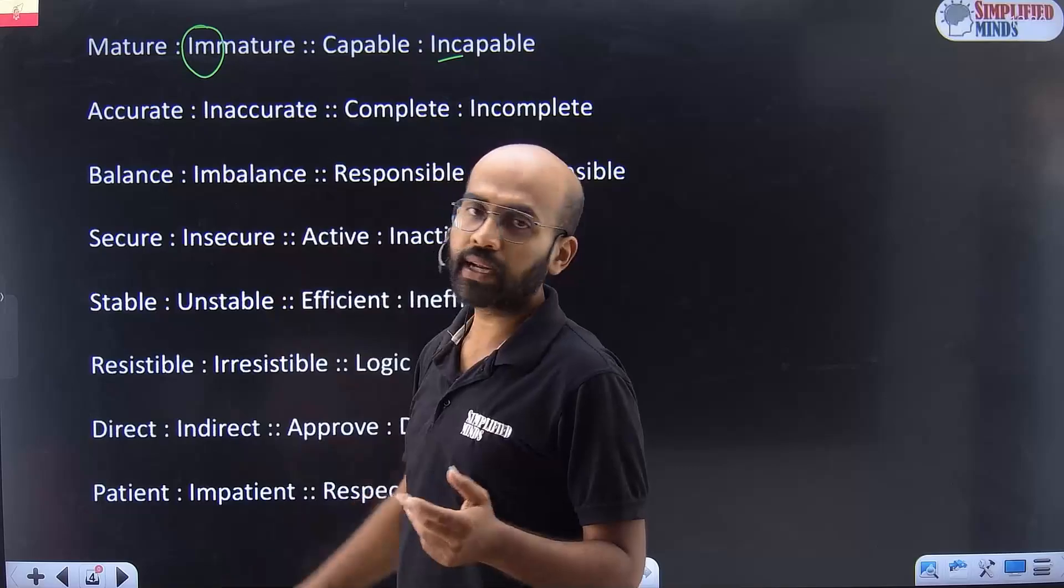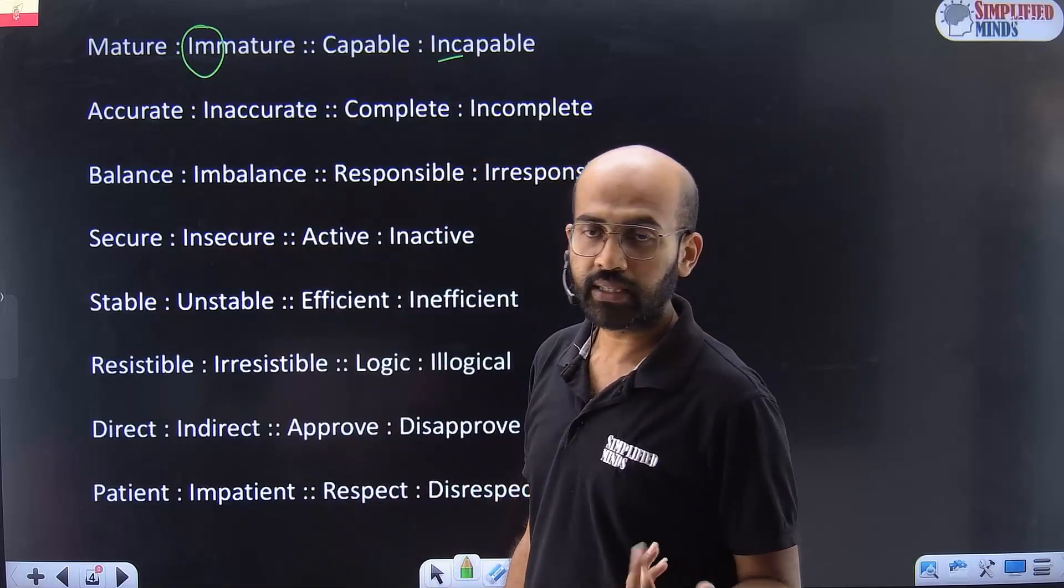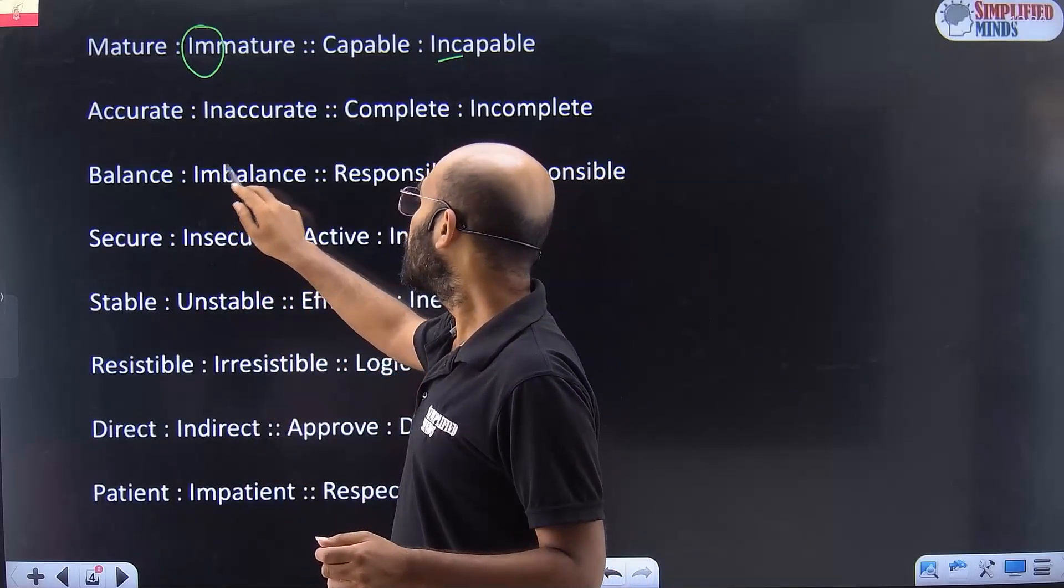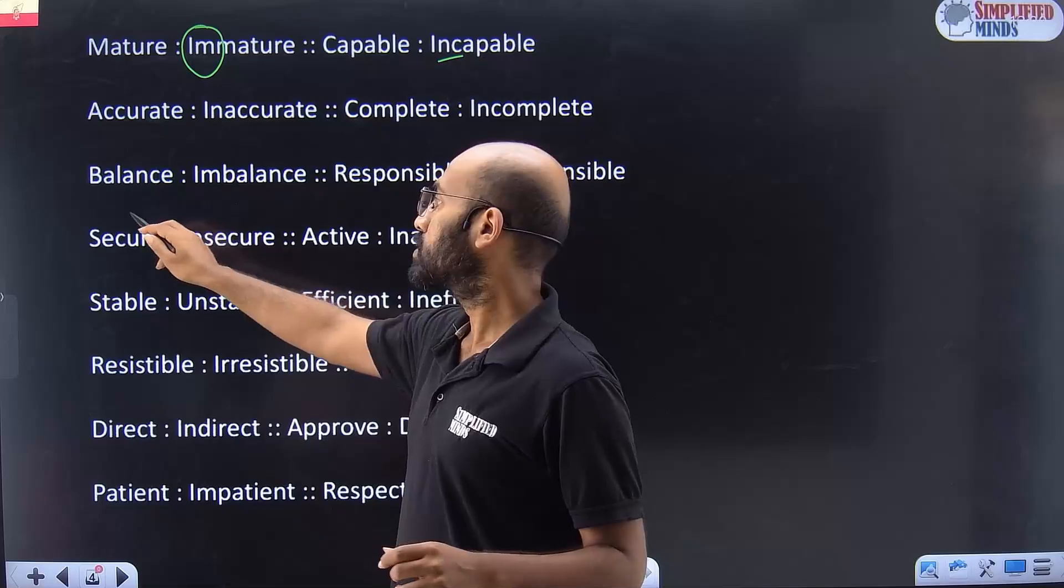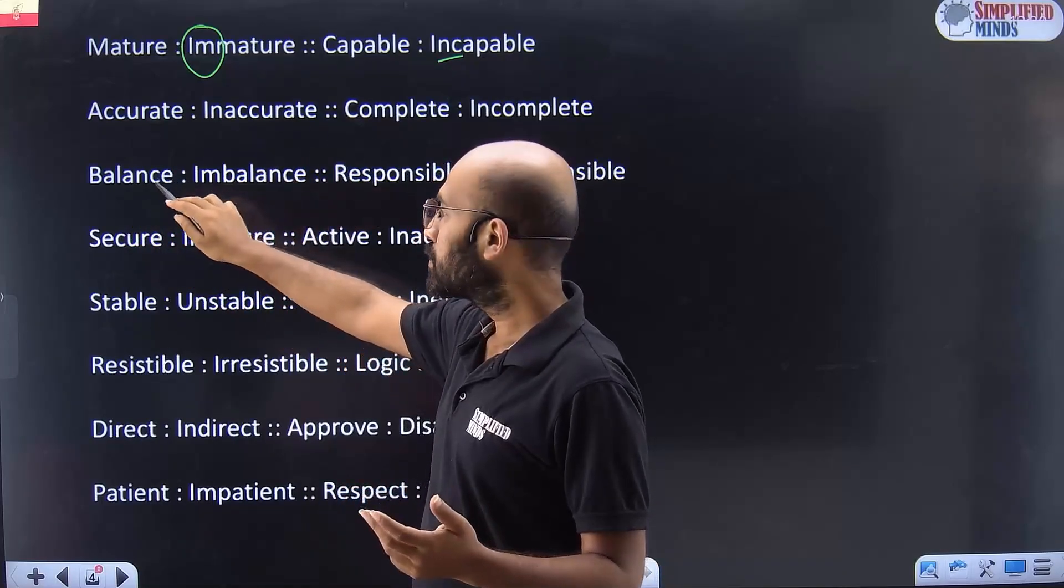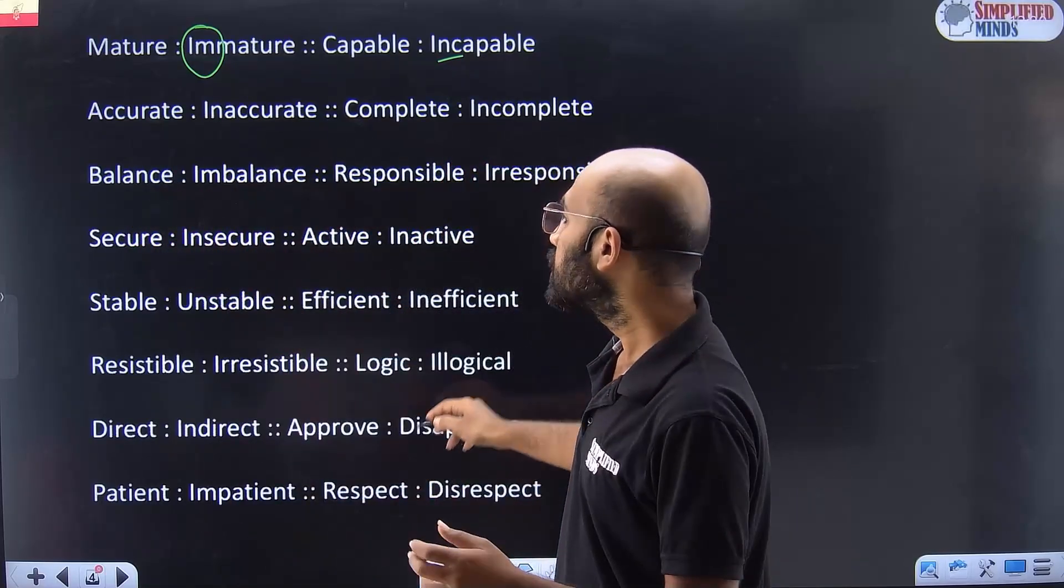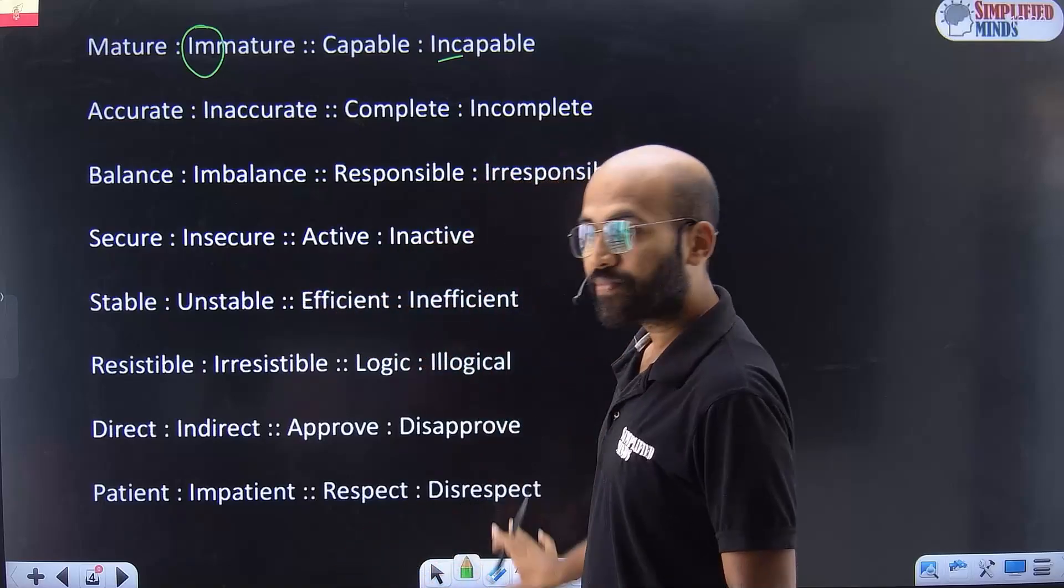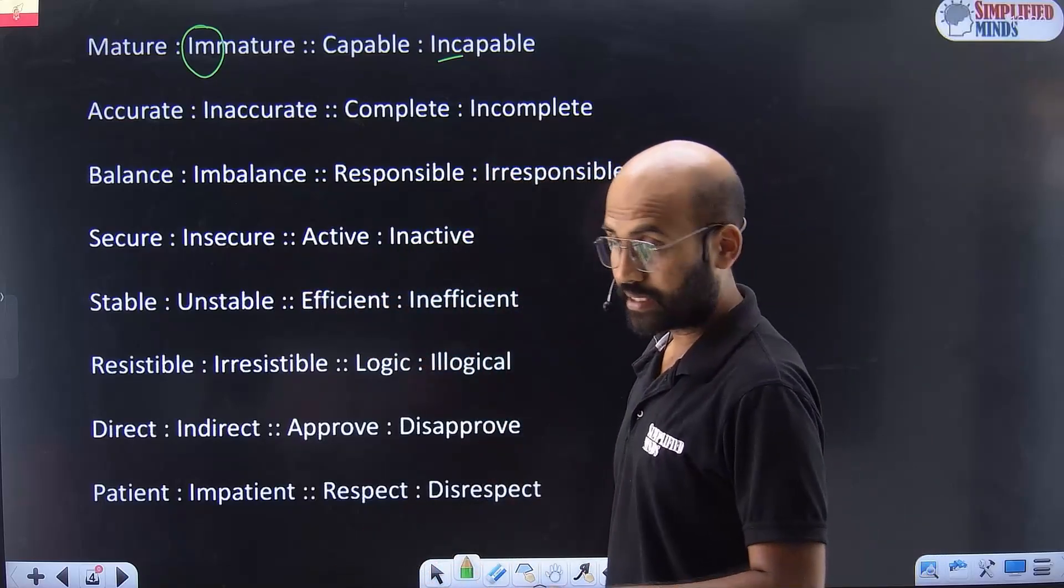So the question can be asked as the answer. This is complete, incomplete. Accurate, inaccurate. You should be able to know what that is. So similarly, responsible, irresponsible. You should be able to write imbalance. So now I have given the entire answers.